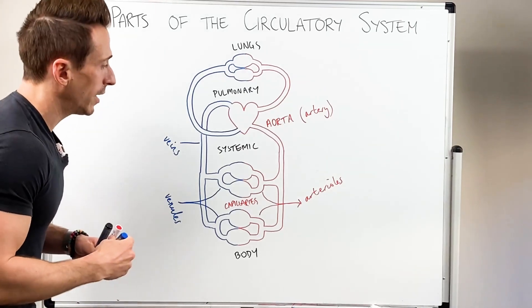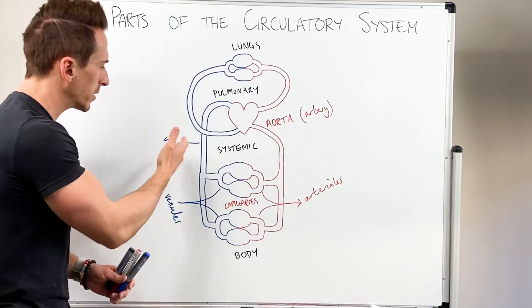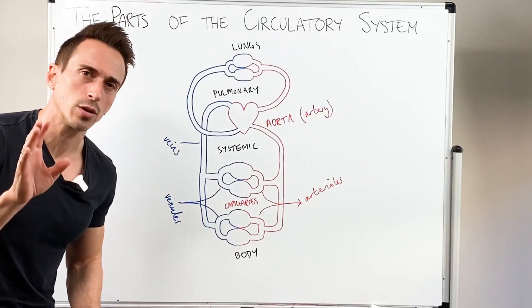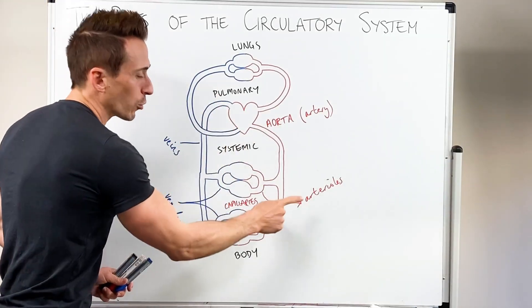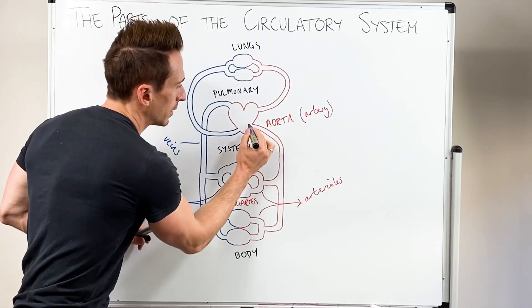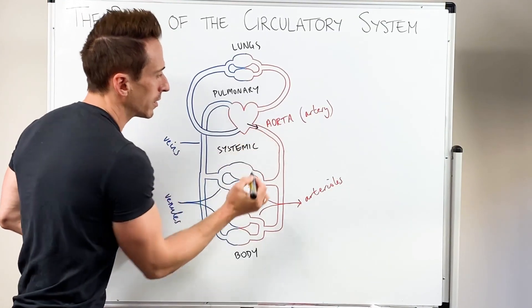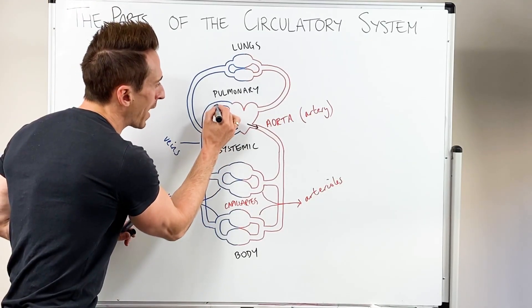Now you could say that all arteries and arterioles are oxygenated and all veins and venules are deoxygenated. But that's not necessarily true because in actual fact, arteries are vessels that leave the heart. This is leaving the heart, so that's why it's an artery. This is a vein because it's going back to the heart.